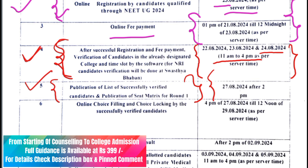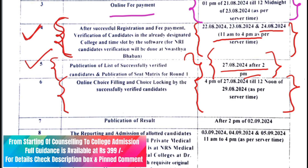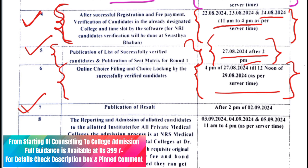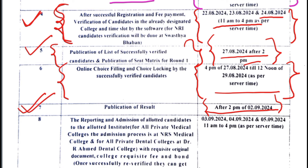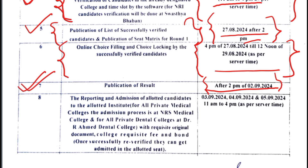After the seat matrix is published, the choice filling and locking process follows. Results will be declared after 2 PM. This is the 8th point: the reporting and admission of allotted candidates to the allotted institute. The college is allotted and this is the admission time period.